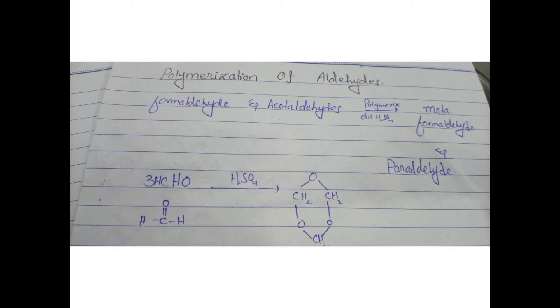Polymerization of three molecules occurs. When there's cyclization, it forms a six-membered ring. Three molecules of formaldehyde combine in the presence of sulfuric acid.